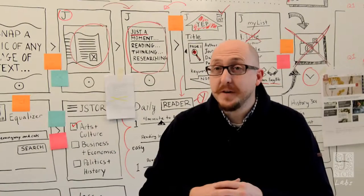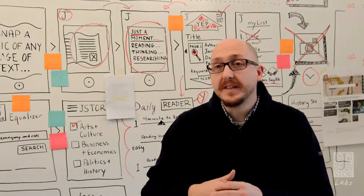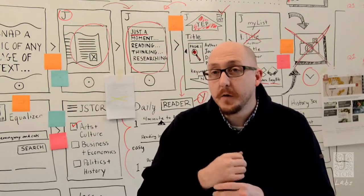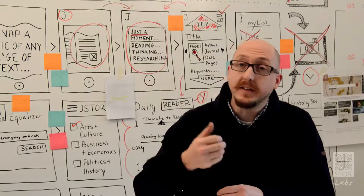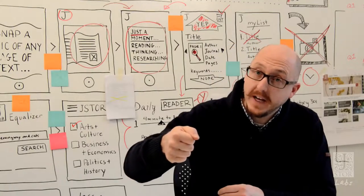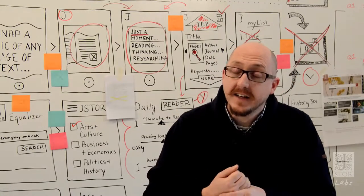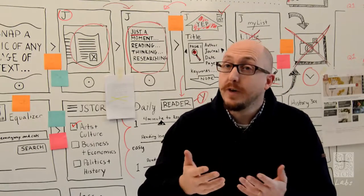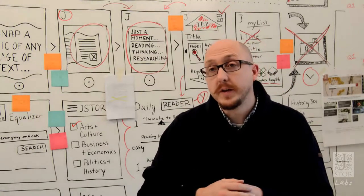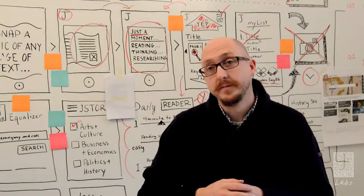I'm Alex Humphries, head of JSTOR Labs. This week we're testing out the idea of a smartphone app that lets you take a picture of any page of text, and it will return relevant JSTOR research articles.